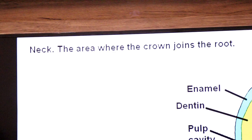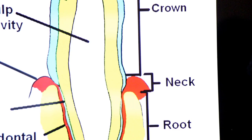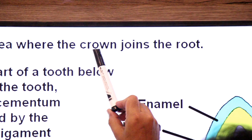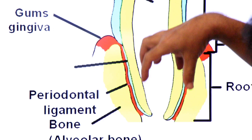Now let's go to the neck part. The neck is the portion where the crown meets with the root. The area where the crown joins the root is called the neck.